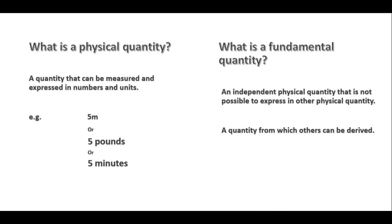So you can measure something like length, temperature, speed, and you put the number and then you put the unit. Now how is this different from a fundamental quantity? A fundamental quantity is an independent physical quantity that is not possible to express in any other physical quantity, or a quantity from which others can be derived.